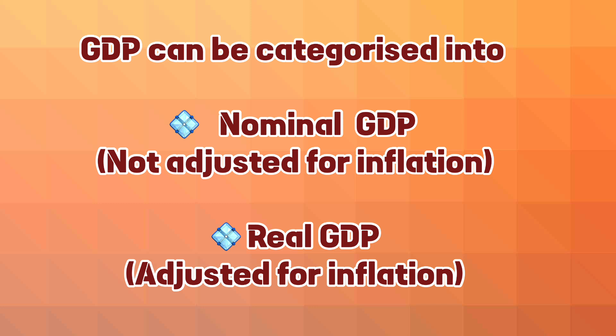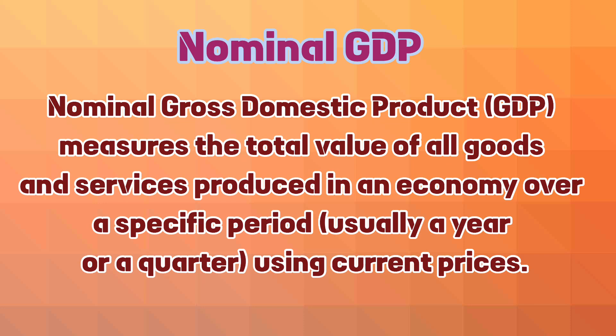GDP can be categorized into two types: nominal GDP, which is measured at current market prices and does not account for inflation, and real GDP, which is adjusted for inflation, providing a more accurate reflection of an economy's size and how it is growing over time.